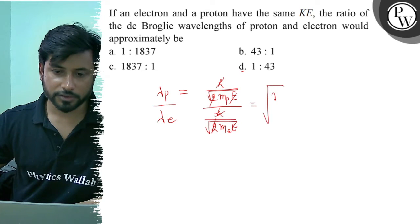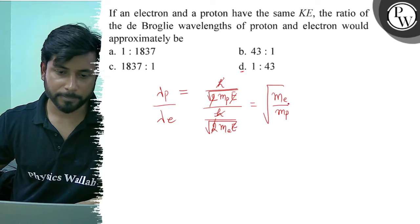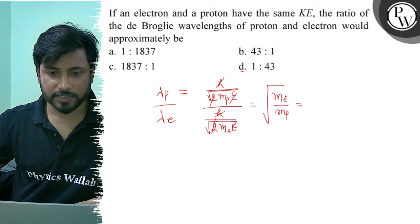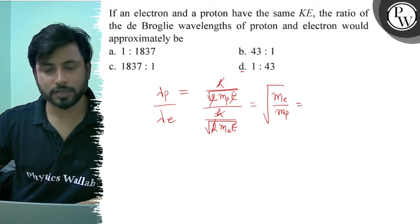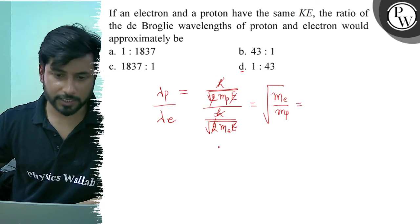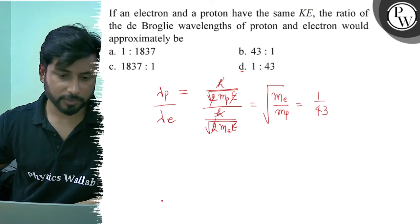So, this means that the mass of electron upon mass of proton. Now, this mass is about 2000, 1800 times. So, if the ratio will be removed, the root will be removed, so it will be removed from 1 by 43.